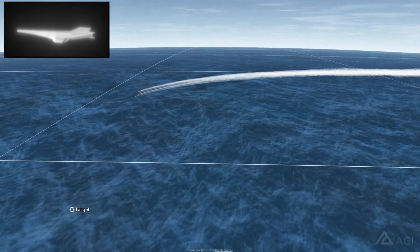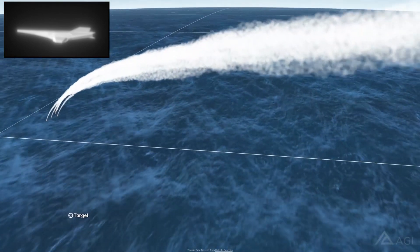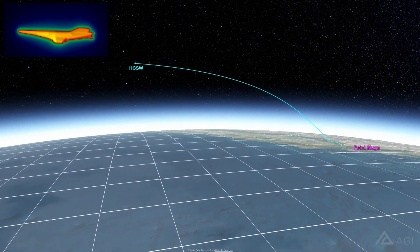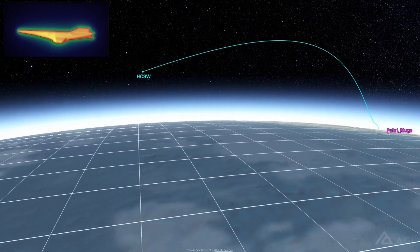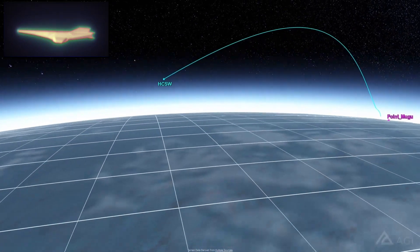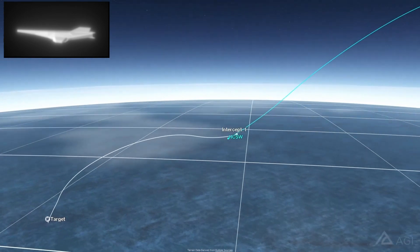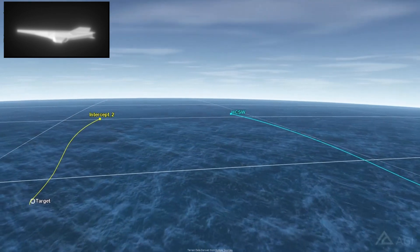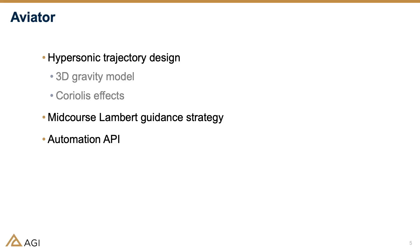For some users who take advantage of Aviator's prop map library, we've added a Lambert midcourse guidance strategy. Essentially, this allows the trajectory to account for changing geometries and target and intercept speeds as these intercept engagements evolve over time. And additionally, as mentioned before, one of the primary aims of this release again is to expand the ability of customers to integrate with STK. The Aviator API has now been significantly expanded to use the STK object model, which now gives the user much more flexibility in terms of automatically configuring aircraft parameters, generating routes, and as Jimmy mentioned, being able to do trade studies.